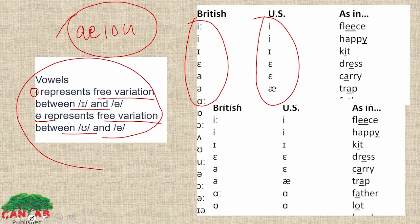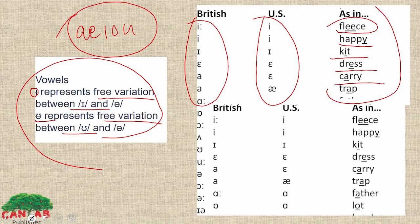Here, as you can see: Fleece, Happy, Kit, Trash, Carried, Trap. You can hear the sound of vowel sounds here — these are the phonetic symbols. Phonetics means what is related to the sound of a word. When we pronounce it, it produces a sound, and that is called phonetics.